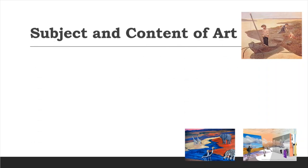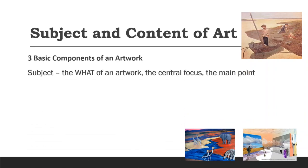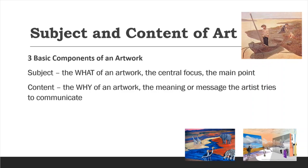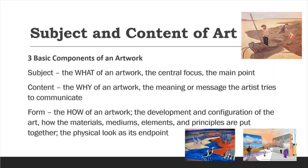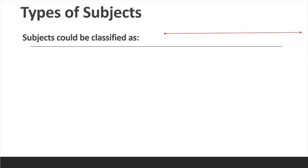Let's begin with the subject and content of art. There are three basic components of an artwork. First is subject — this is the 'what' of an artwork. A subject could be anything from nature, religion, and many others. Next is content — the 'why' of an artwork, its message. The artwork could be sending a message of unity, hope, and even disagreement. Lastly, form — the 'how' of an artwork. It's how the artist conveys his message; it could be a drawing, a painting, a sculpture, or any medium.